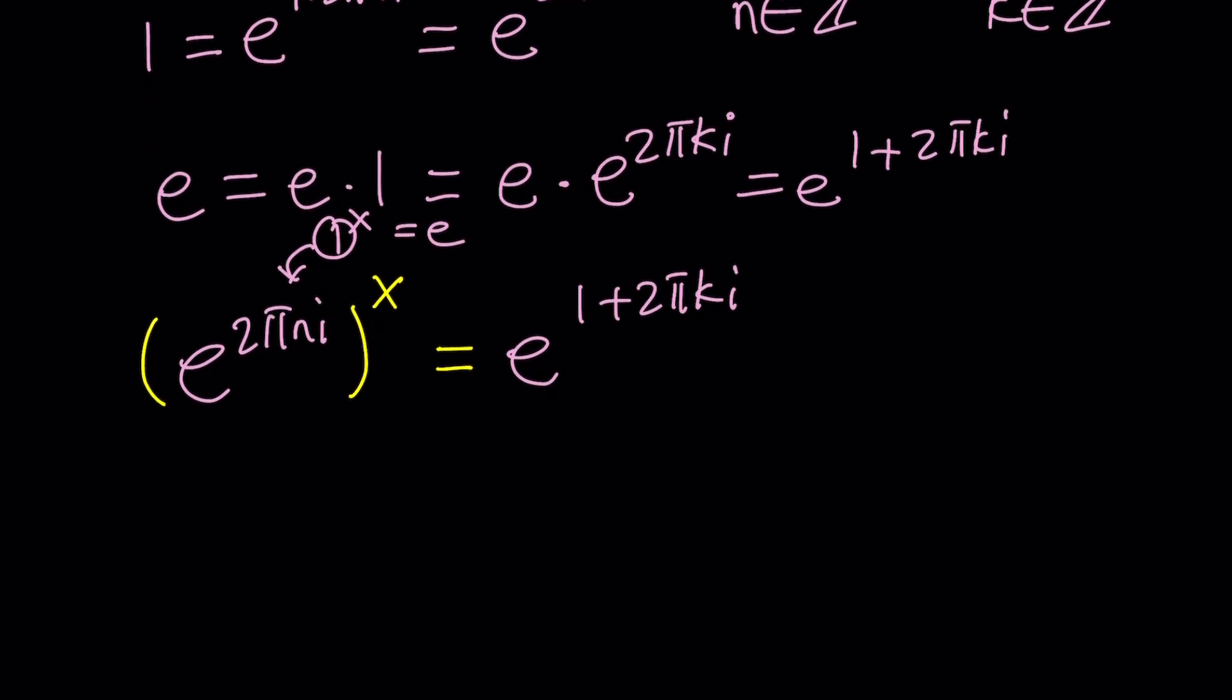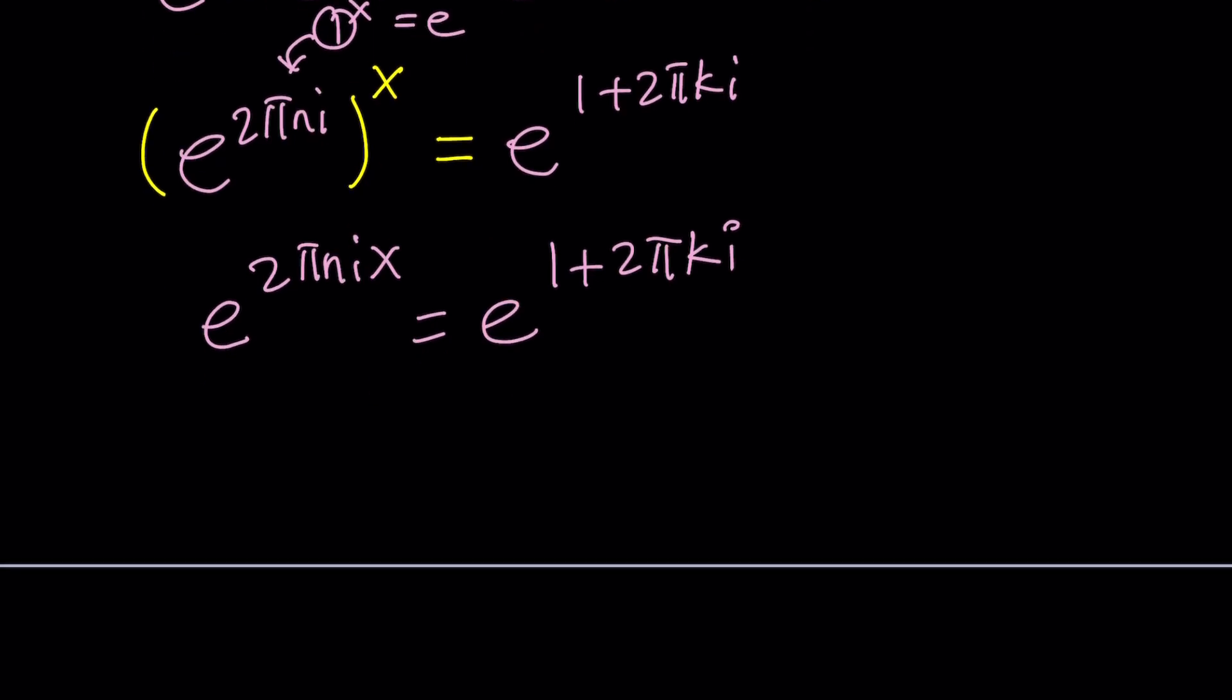Now, here's our equation. Let's multiply the exponents. e to the power 2 pi n i x. You could also write it as 2 pi n x i or 2 pi x n i. Whatever. It doesn't matter. That's equal to e to the power 1 plus 2 pi k i. Now, there might be a problem with picking a generic n in this case because normally x is a variable, so it should give us all possible solutions. We're going to explore different possibilities here. Some people claim that n is not needed on the left-hand side. Anyways, we'll see what happens.